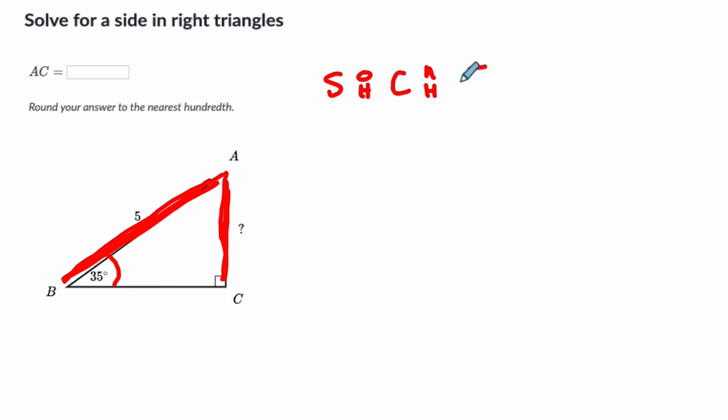And here we're dealing with the sine because it's opposite over hypotenuse. So something here opposite over here, the hypotenuse. So the sine of 35 degrees equals the opposite side, that's the unknown, AC, divided by 5.